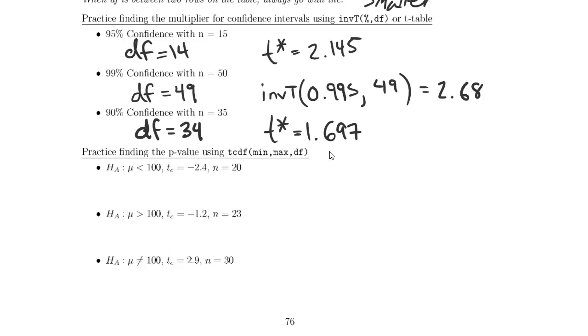That's how we find the multiplier using either the inverse t function or the table. Now we want to use the tcdf function to figure out what our p-values would be in a hypothesis test.